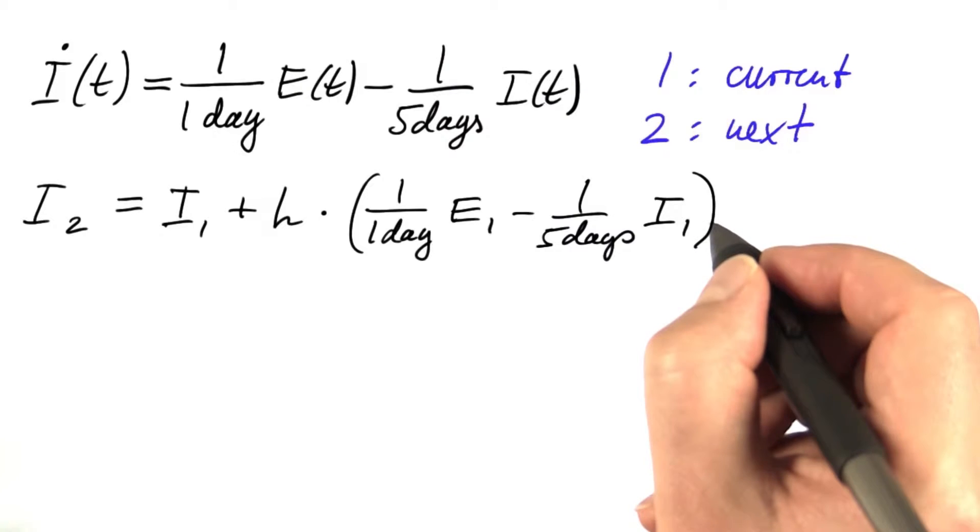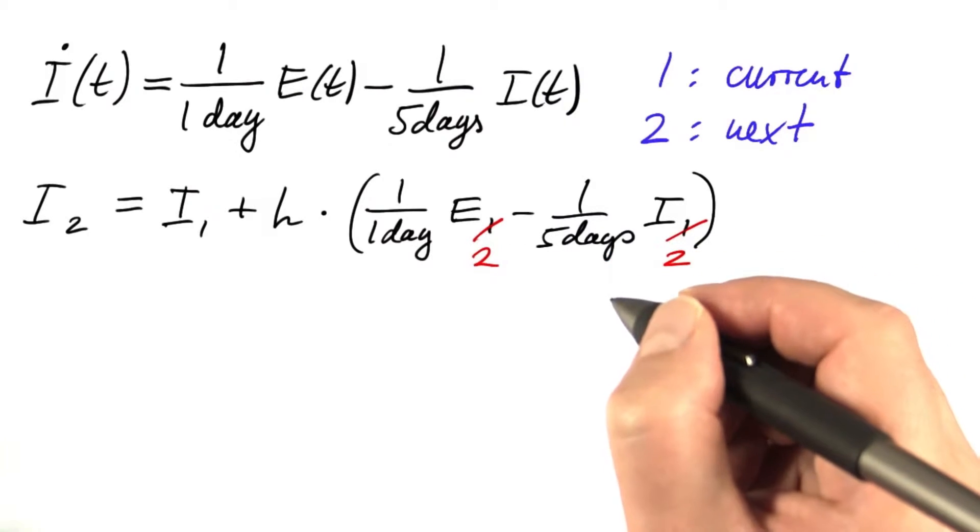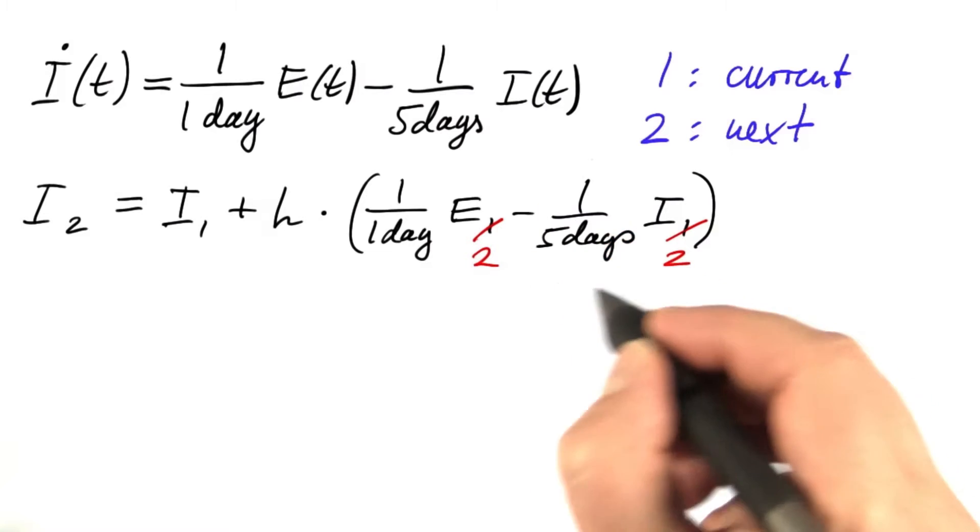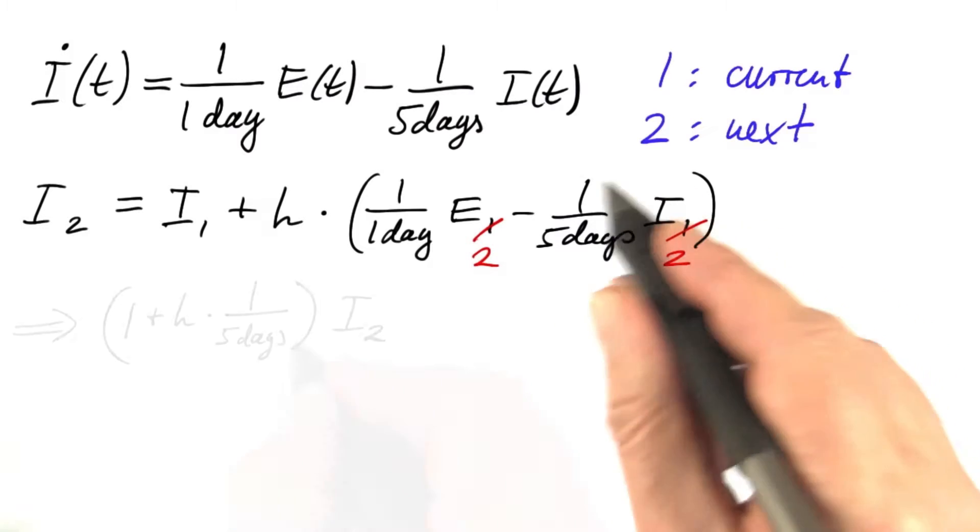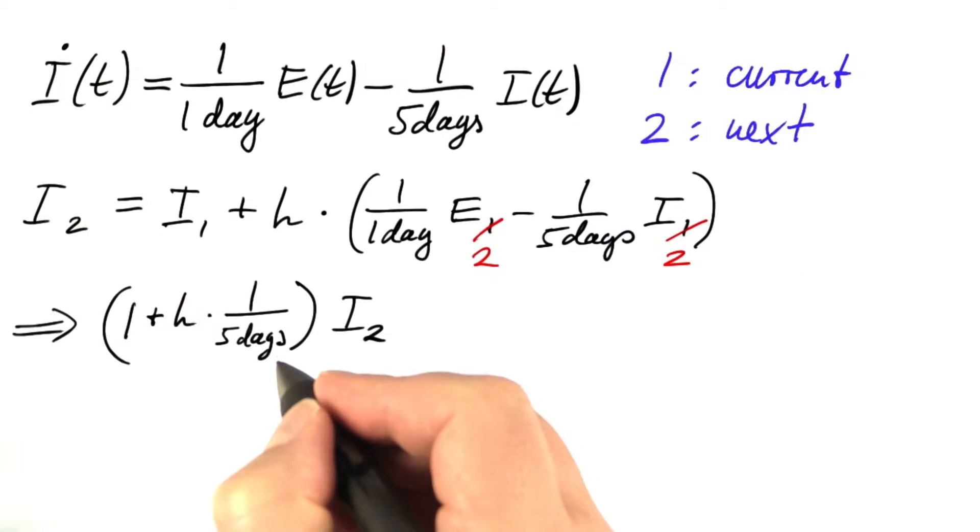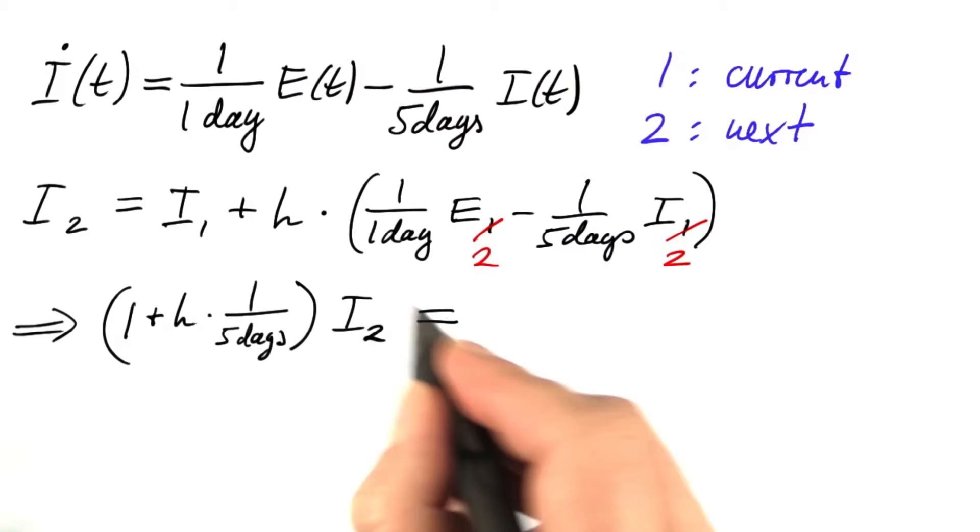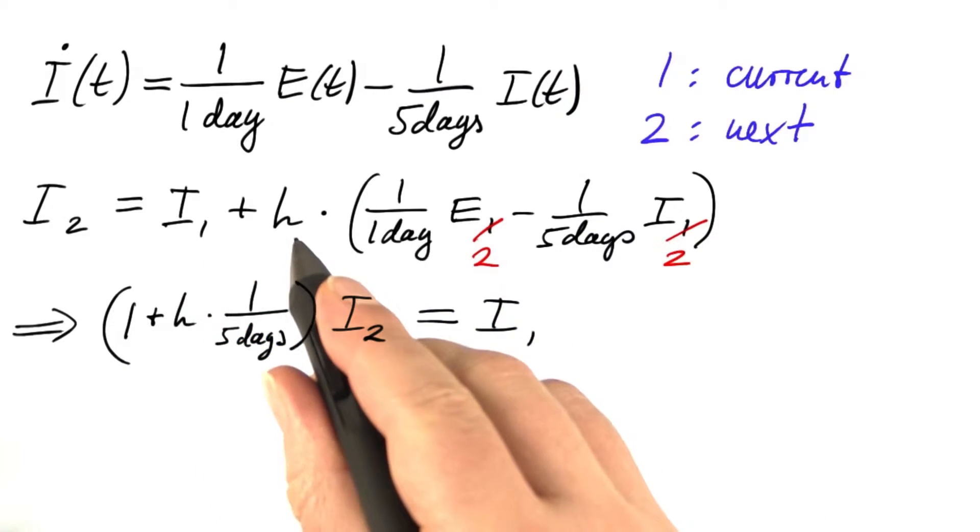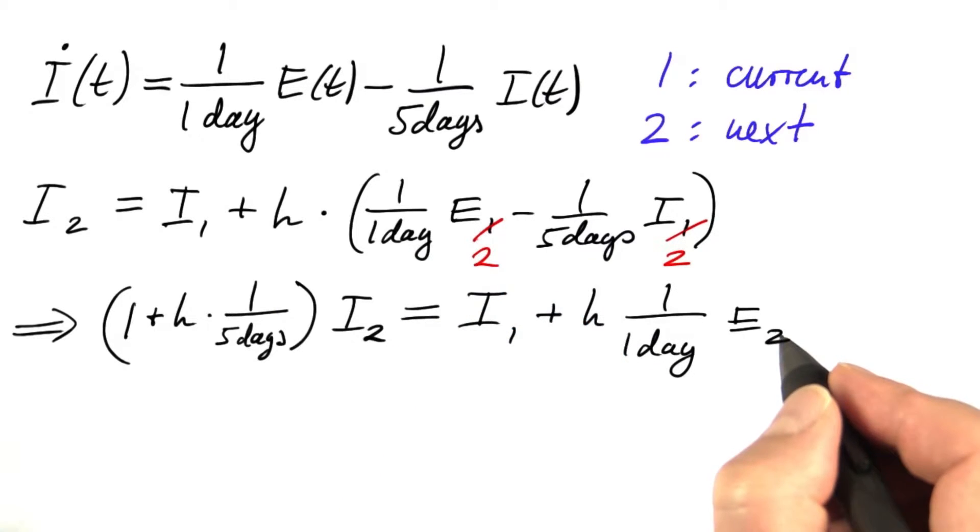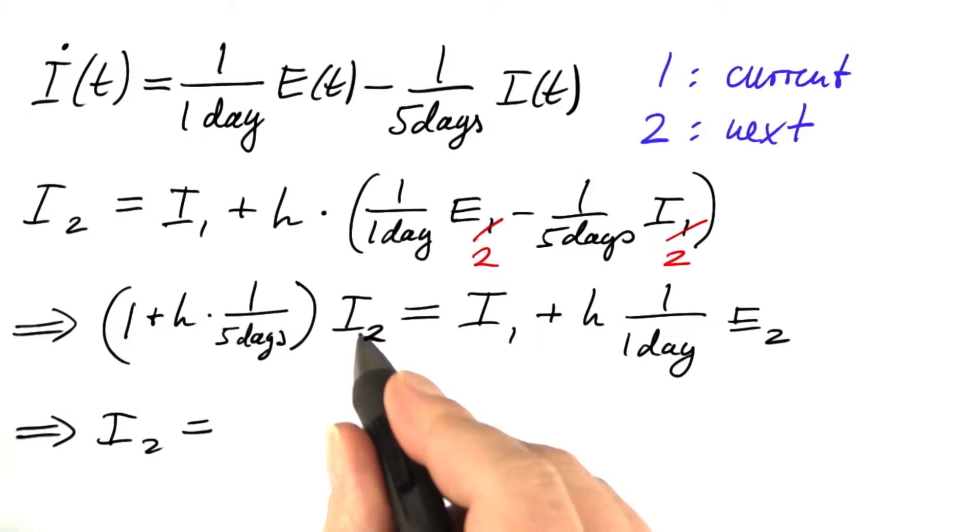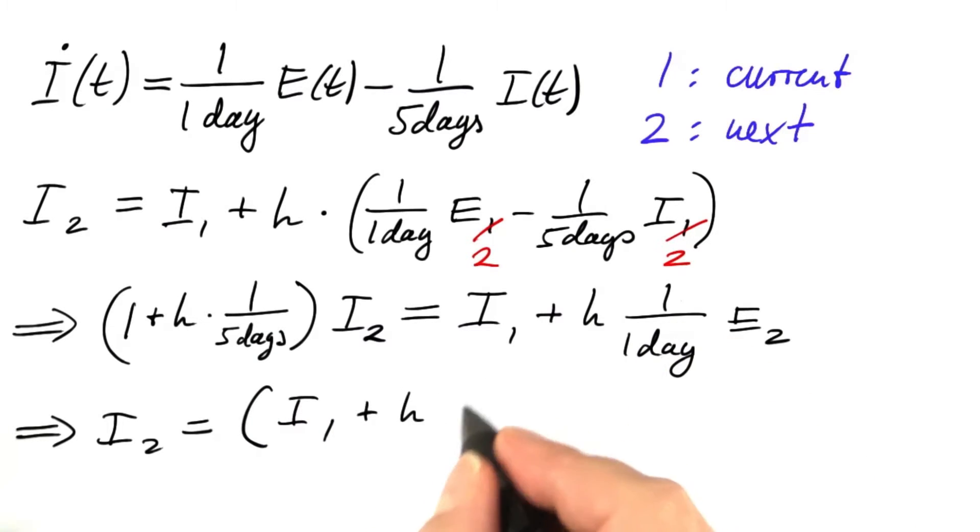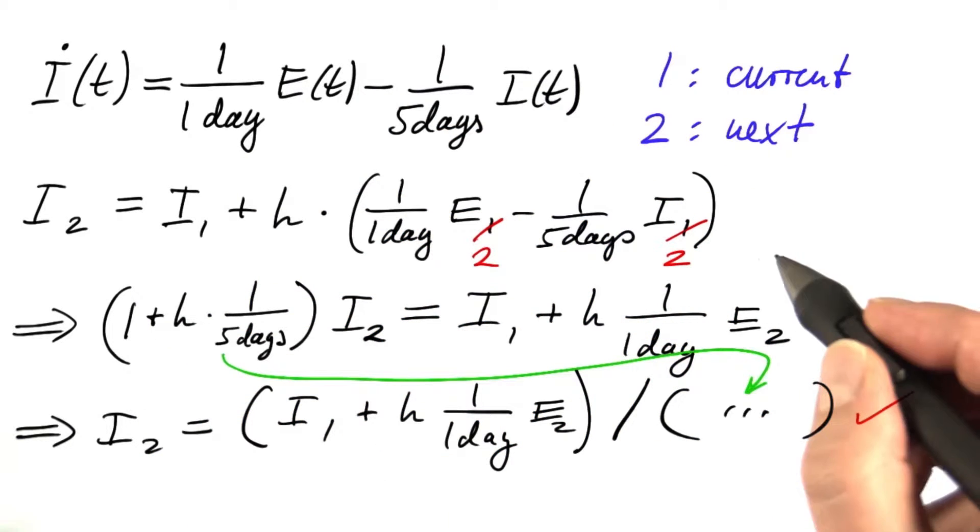But now we want to implement the backward Euler method, which means that we have to use the values for the next time step in this rate of change. I bring this term with the i2 over to the left-hand side and factor out the i2. This leaves me with 1i2 plus h times 1 over 5 days. On the right-hand side, i1 remains and h times 1 over 1 day, e2 remains. And now we can divide by this expression and find i2 equals the right-hand side divided by this expression, i1 plus h times 1 over 1 day times e2 divided by this expression. This completes the equation for i.